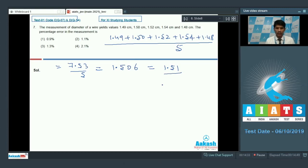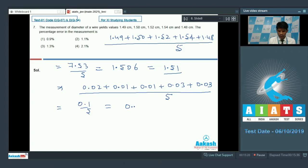Now we need to take the mean absolute error here. It will be, this is the mean value of the measurements, so it would be 0.02 plus 0.01 plus 0.01 plus 0.01 plus 0.03 plus 0.03 divide by 5. It will give us 0.1 divide by 5 or it will be 0.02. This is the mean absolute error.